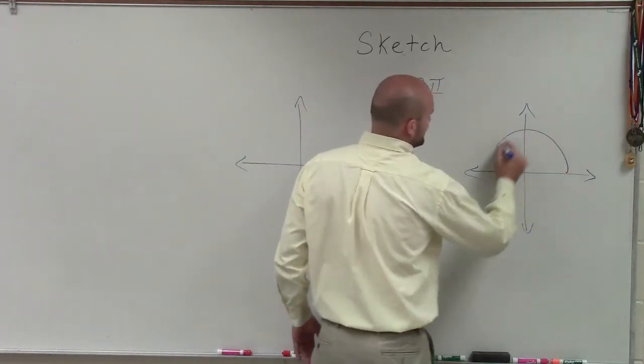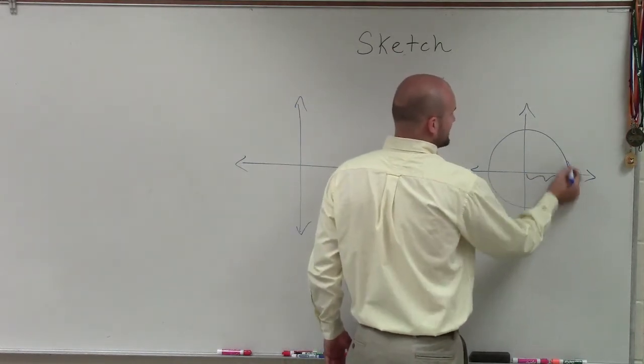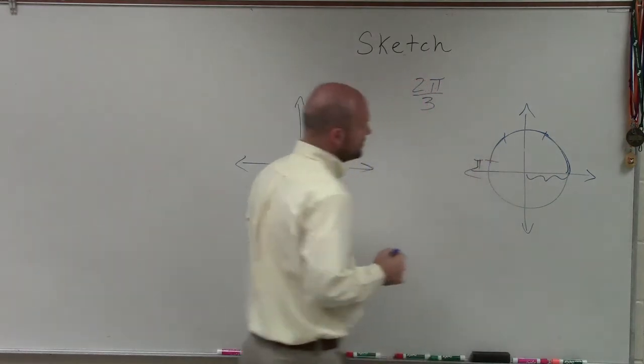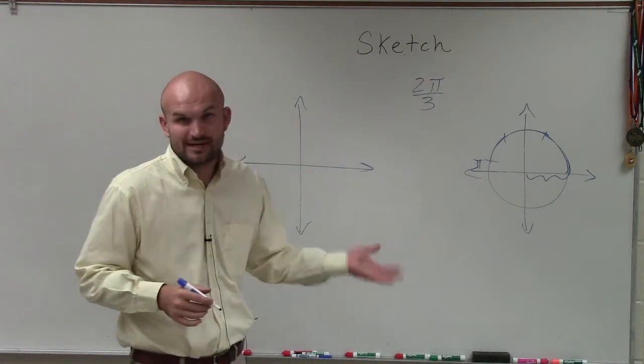And remember, going back to our talk on radians, a radian is the distance of our radius wrapped around our circle, which is exactly π radians.